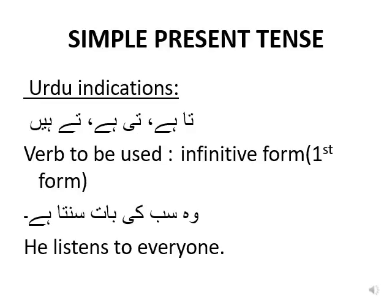We will start with simple present tense. We will first see what are the Urdu indications. The Urdu sentences of simple present tense end at 'ta hai', 'ti hai', 'te hai'. Like if you see the sentence 'wo sabki baat sunta hai', it is ending at 'ta hai', which means it is a simple present tense.